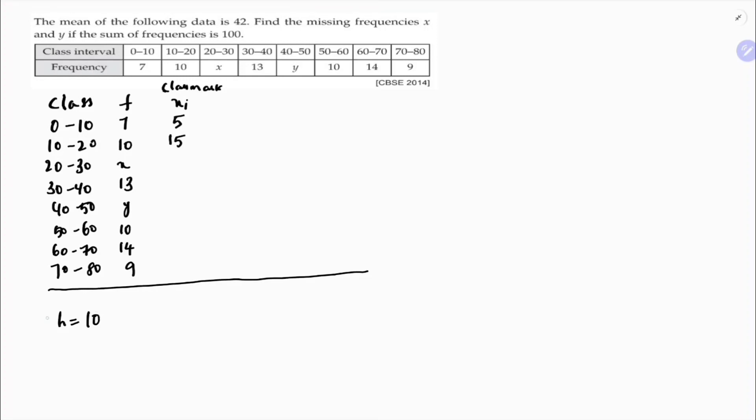So instead of doing for all, just you can add h if the classes are continuous. So 15 plus 10, 25 plus 10, 35, 45, 55, 65, 75.